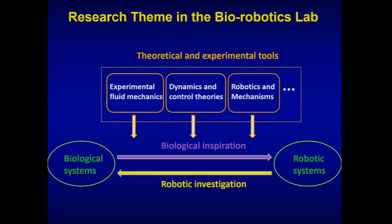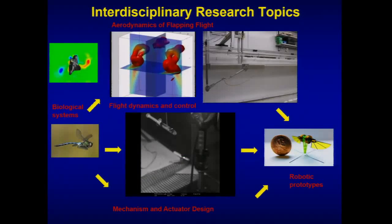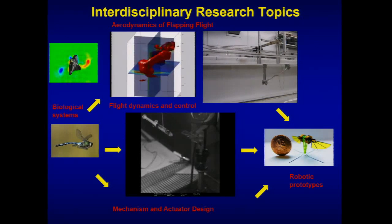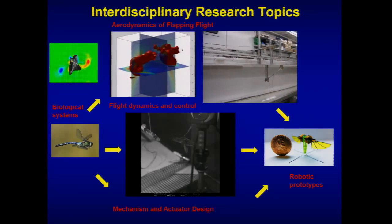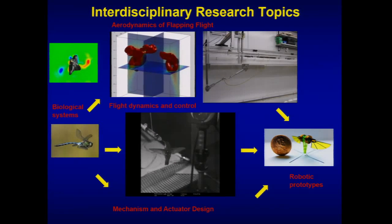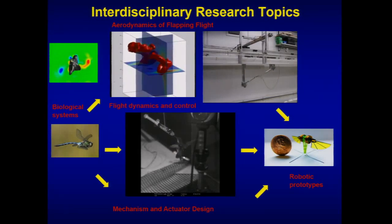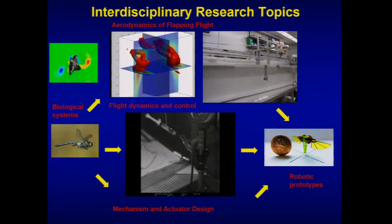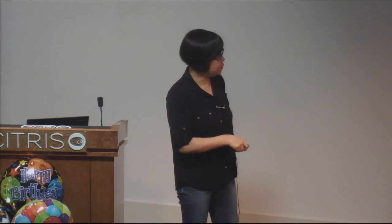Most of my students are dynamics and control robotics people, and I usually have one student on experimental fluids. For the forces and torques on the right-hand side of the equation, we need to get them from tank experiments and air experiments. In order to go from a biological system to a robotic system, you need to decode the fluid phenomena and study, for example, how hummingbirds control their flight when scared. Then you build your robot and extract the main information needed for controls.